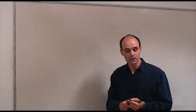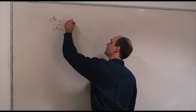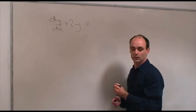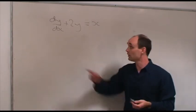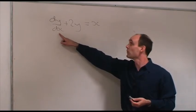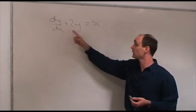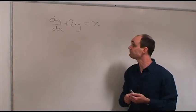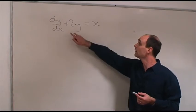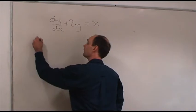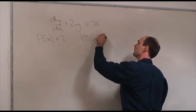The first differential equation we're going to solve is a really simple one: dy/dx + 2y = x. You can look at this and say it's first-order because the highest derivative is dy/dx, and it's linear because dy/dx and y are each appearing as linear factors. You can also see it's of the general form we wrote down earlier, where p(x) = 2 and q(x) = x.